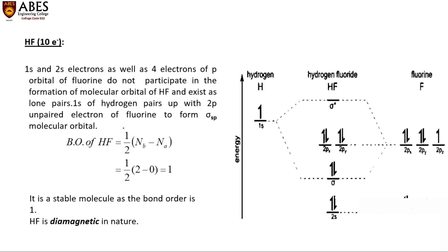The next heteronuclear diatomic molecule is HF, which contains 10 electrons. Due to the large electronegativity difference between hydrogen and fluorine, sp mixing takes place. Experimentally, the energy of hydrogen 1s is −13.6 eV, fluorine 2p is −18 eV, and fluorine 2s is approximately −40 eV.